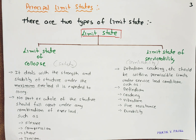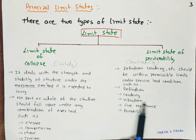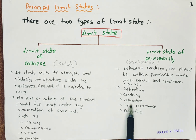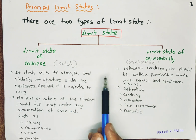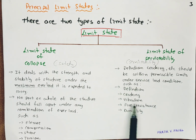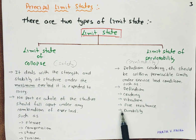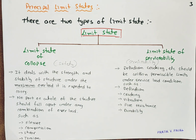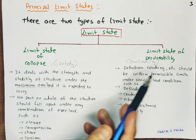There should be limited deflection so that we feel comfortable living inside. Visible cracking in the structure also makes us uncomfortable, and vibrations felt in our structures are also not good for occupants. Beside safety, even if the structure doesn't collapse, people living inside may be threatened or uncomfortable due to deflection, cracking, vibration, fire resistance, and durability. This differentiates limit state of collapse from limit state of serviceability.